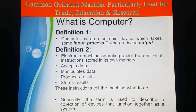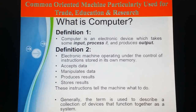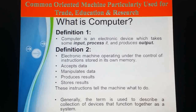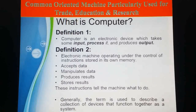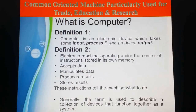Now we will discuss the definition of computer. A computer is a high-speed electronic data processing device which takes some input, processes it, and produces output. Another definition is that it is an electronic machine operating under the control of instructions stored in its own memory. It accepts data, manipulates data, produces results, and stores results. A computer can do simple to complex calculations within a fraction of seconds.